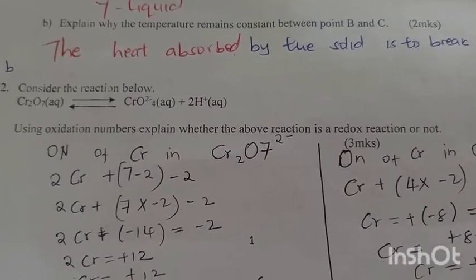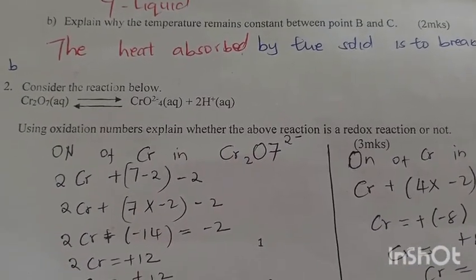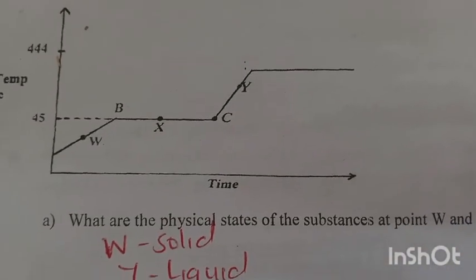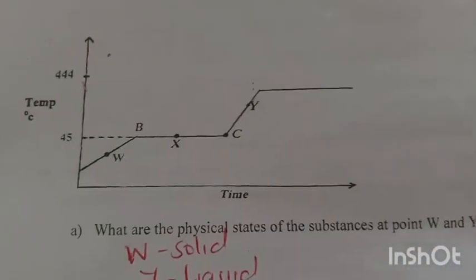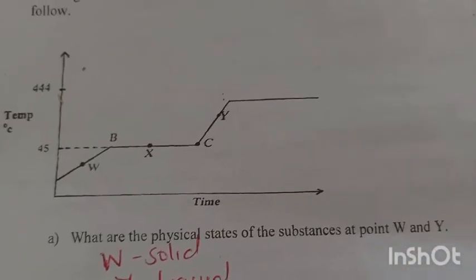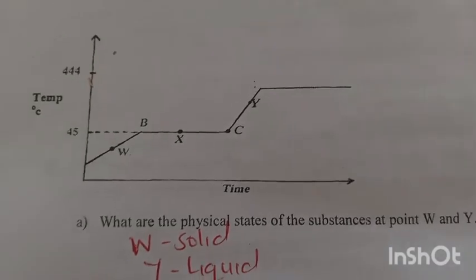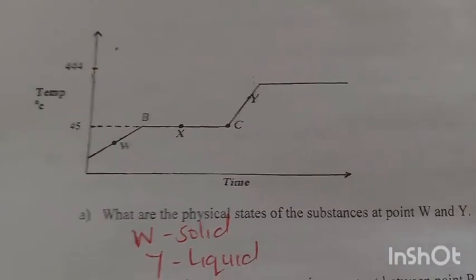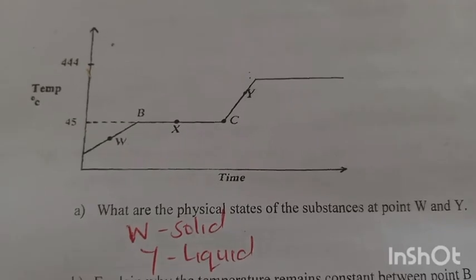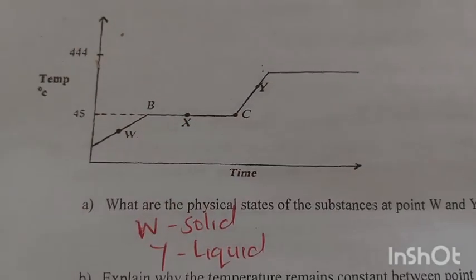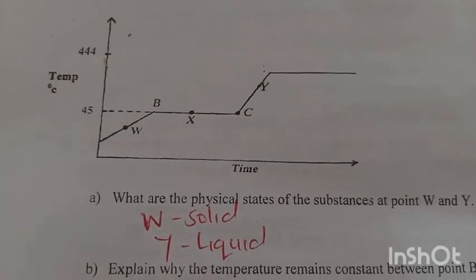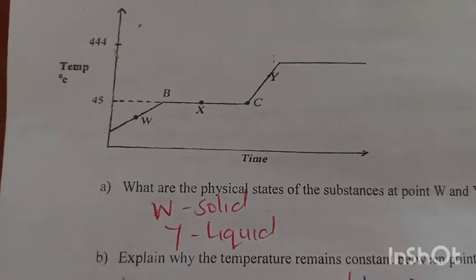Explain why the temperature remains constant between point B and C. At point B and C, the heat supplied is used to break down the forces of attraction holding the solid particles together, and therefore the temperature remains constant as the solid turns into a liquid.